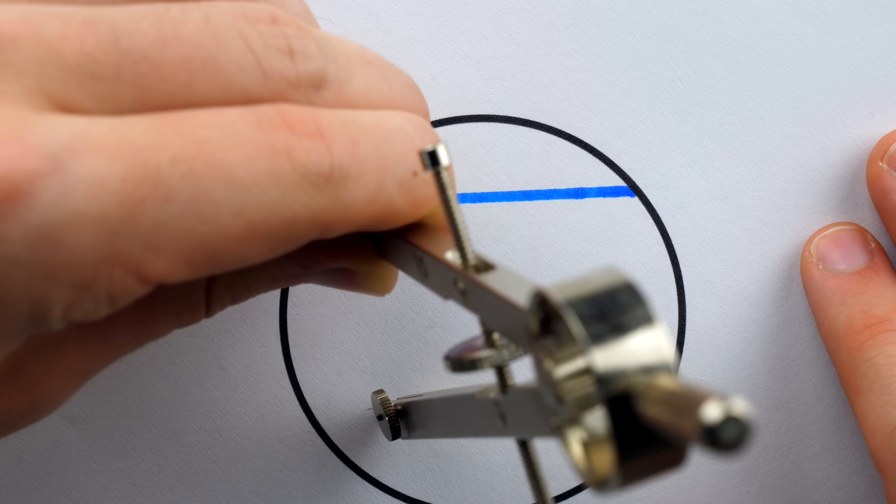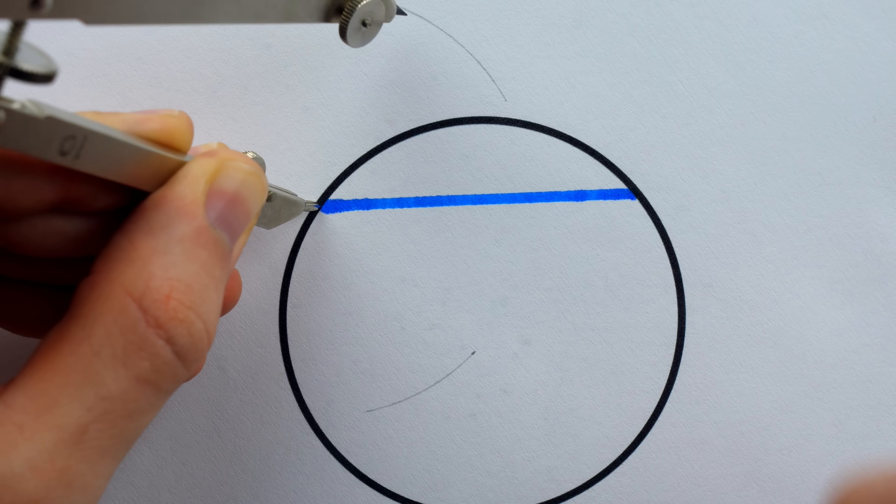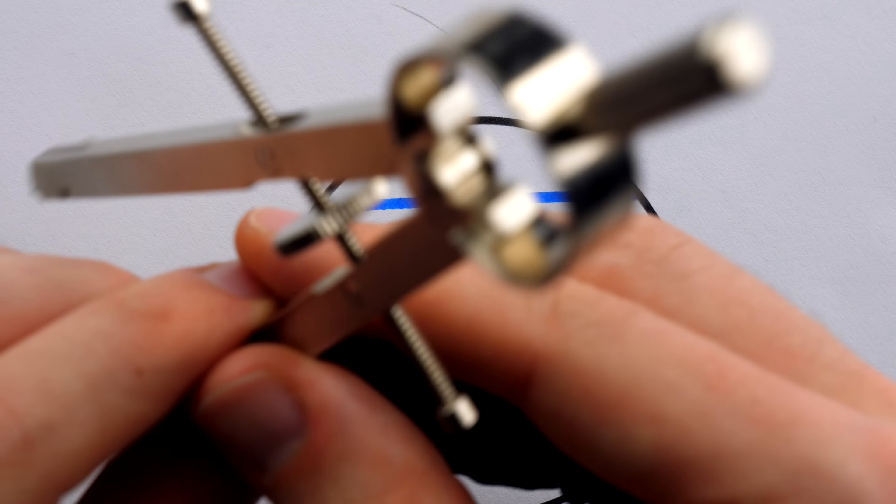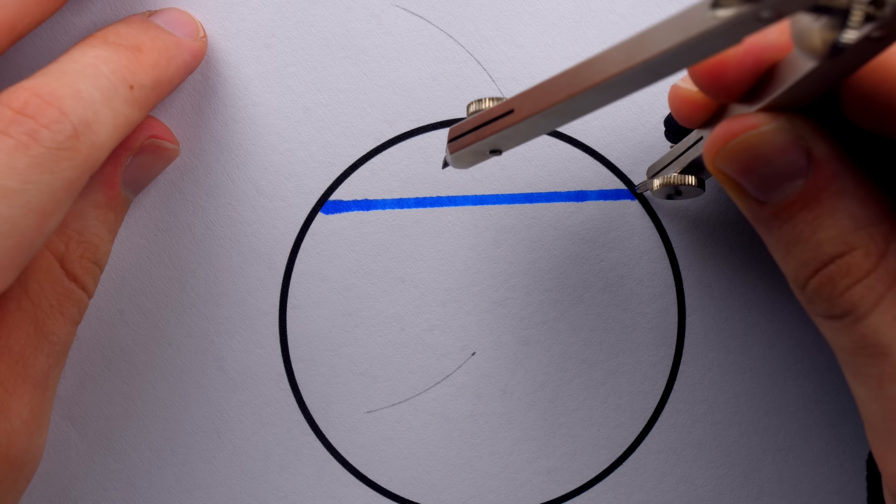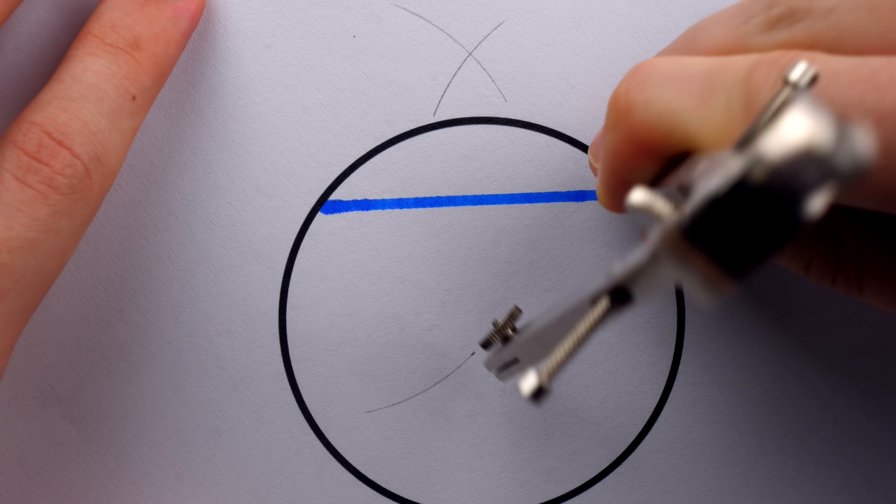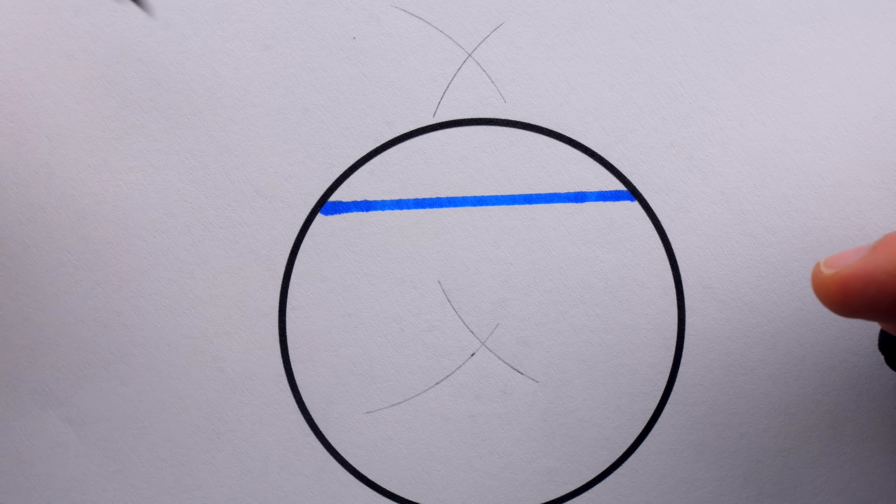All we really need is an arc below the chord and an arc above the chord. Then repeat the same exact process, not changing the width of the compass, on the other endpoint of the chord. We do an upper arc which intersects that arc we previously drew, and we do a lower arc which also intersects the arc we previously drew.